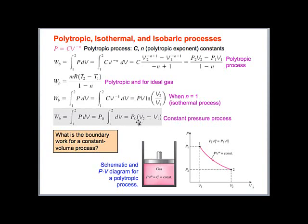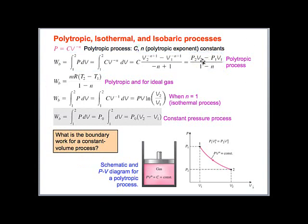For a constant pressure process, integration becomes simple — we take pressure out of the integrand and integrate the volume. For a constant volume process, the boundary work is zero: since V2 equals V1, V2 minus V1 equals zero, and ln(V2/V1) equals ln(1) equals zero. So the boundary work for a constant volume process is zero.